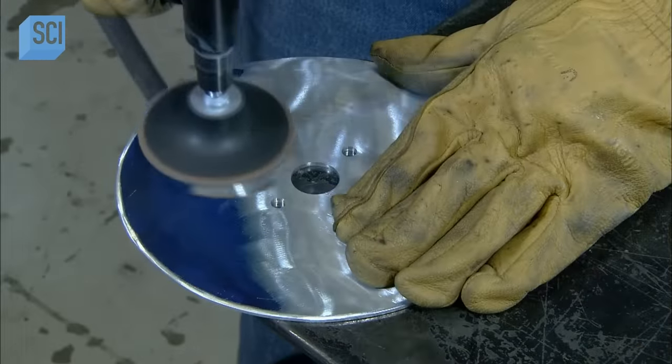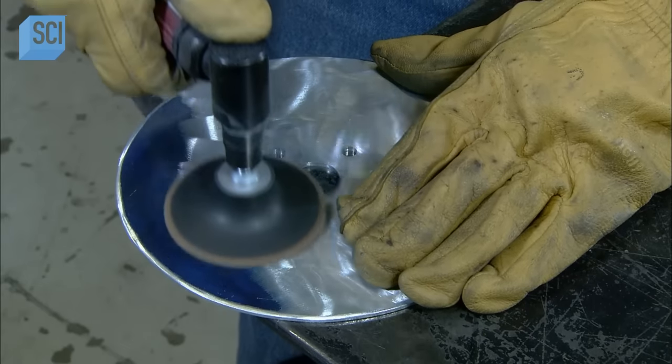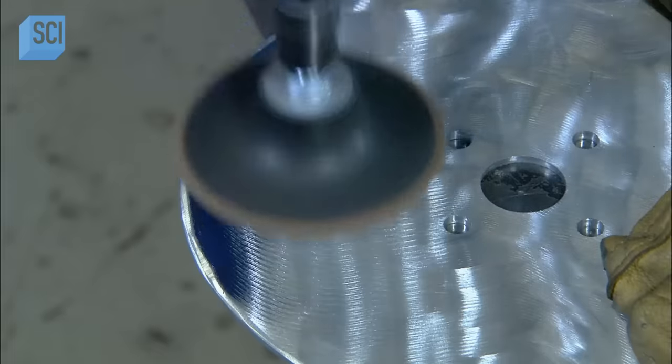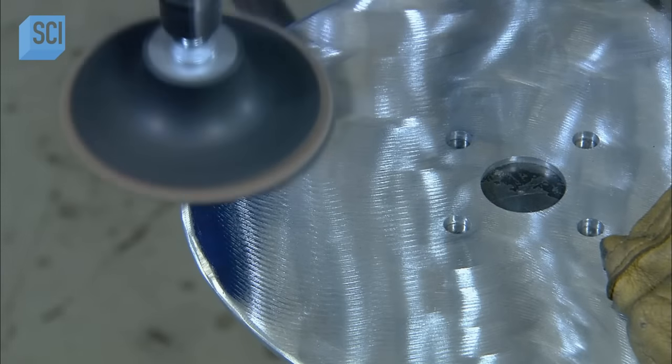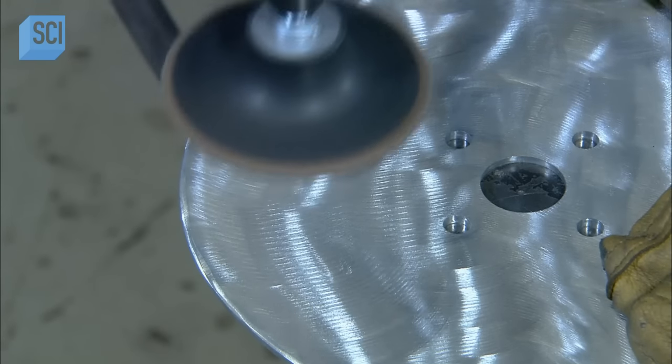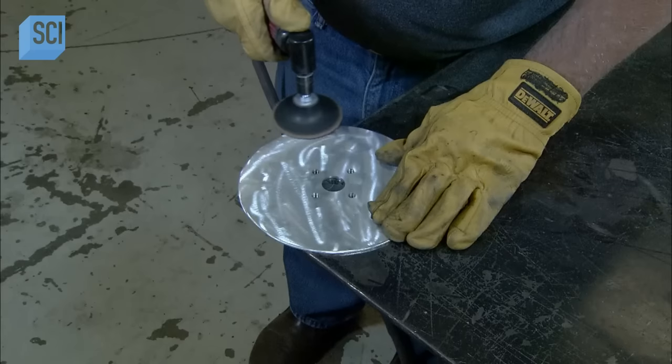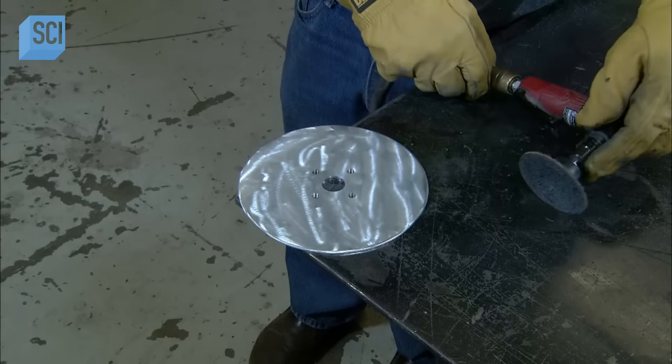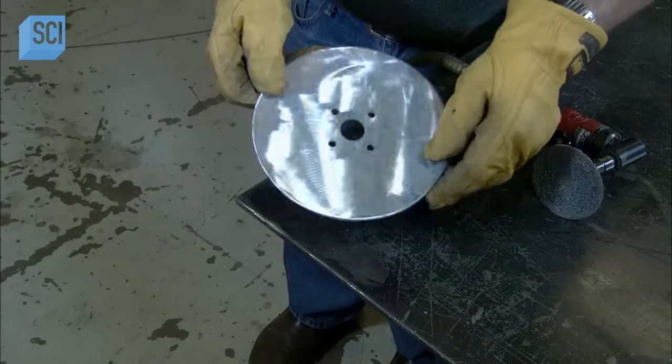He sands off the plastic liner and abrades the aluminum surface to a satiny sheen. The brake disc is now ready for assembly to the lunar rover.